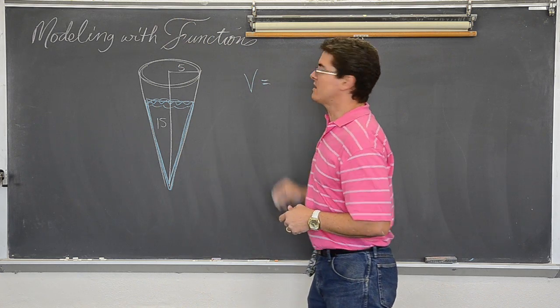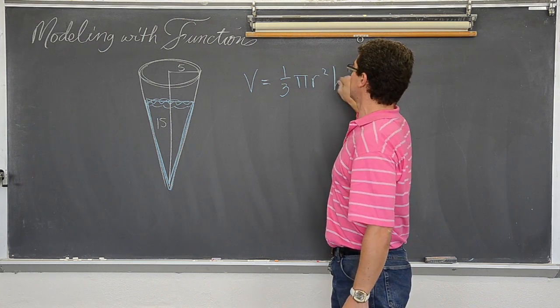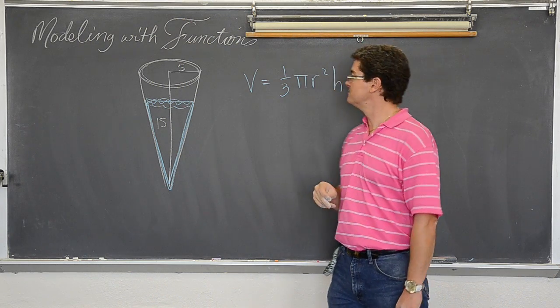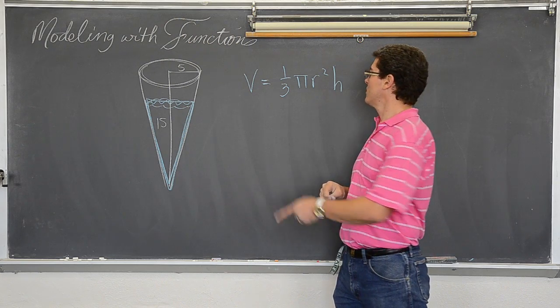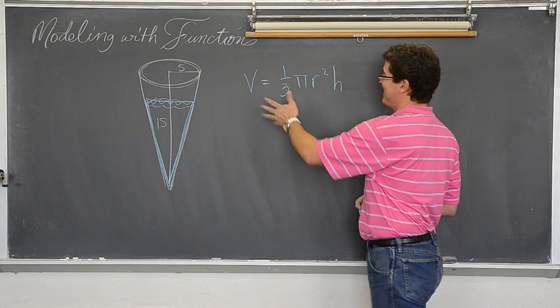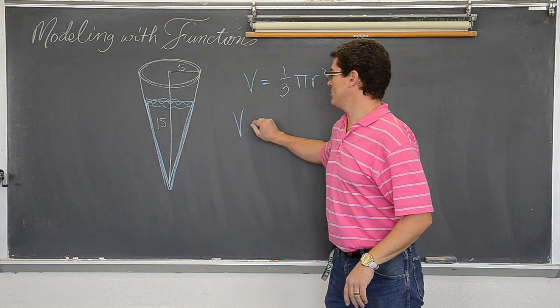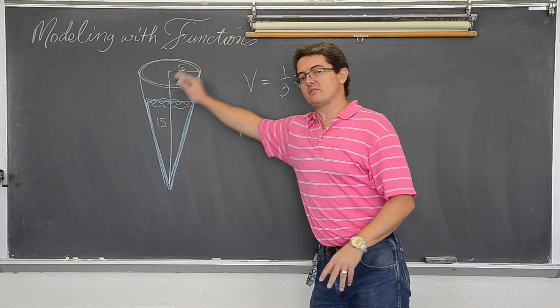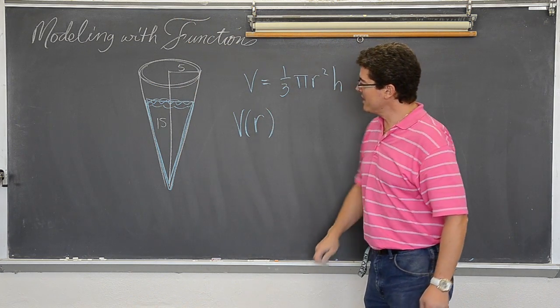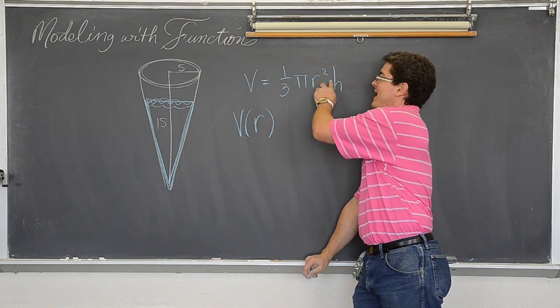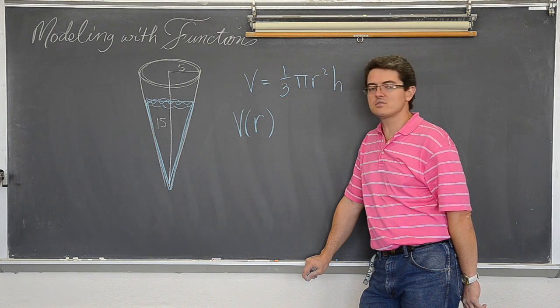Well, the volume of a cone is one-third π r² times h. Yeah. Okay. I am spacing out a little bit. Sorry. So... Okay. I want to write this formula for volume so that it is going to be specific to this shape of cone so that it is in terms of r and not r and h. Okay. How am I going to do that?